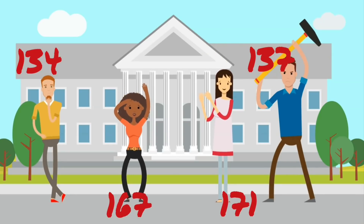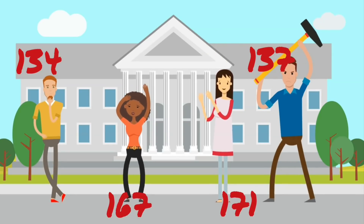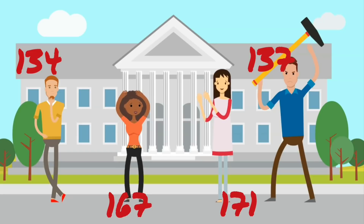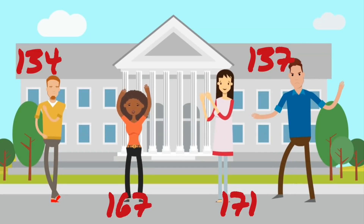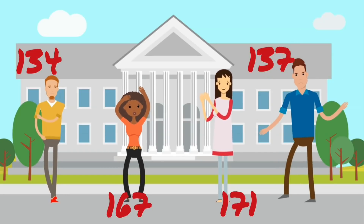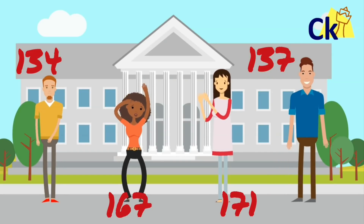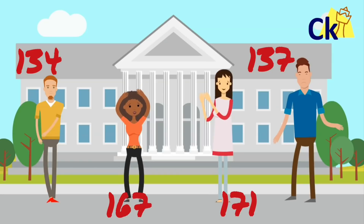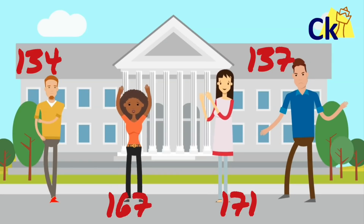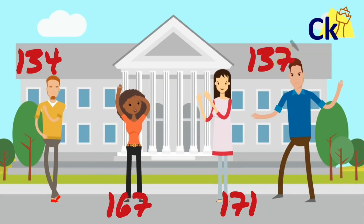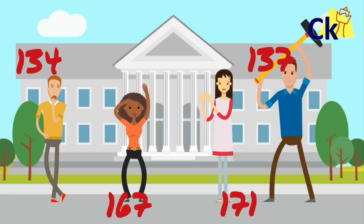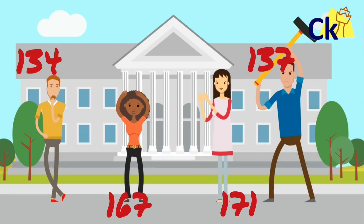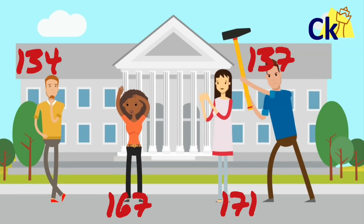Look at the difference here. This happened exactly the same in CAT 2016, where the paper was obnoxiously different for the two slots. Slot 1 was super happy because the cutoff went to 167, while Slot 2 were very, very sad.